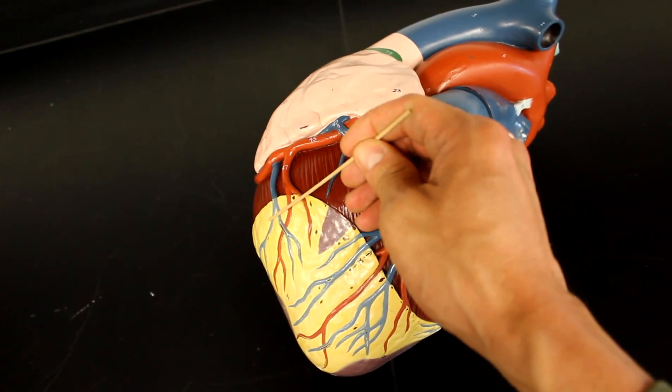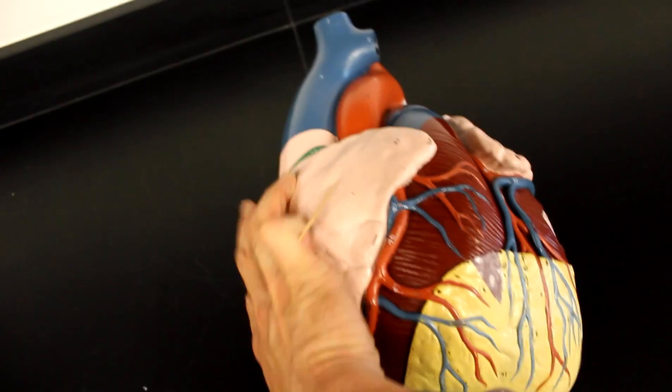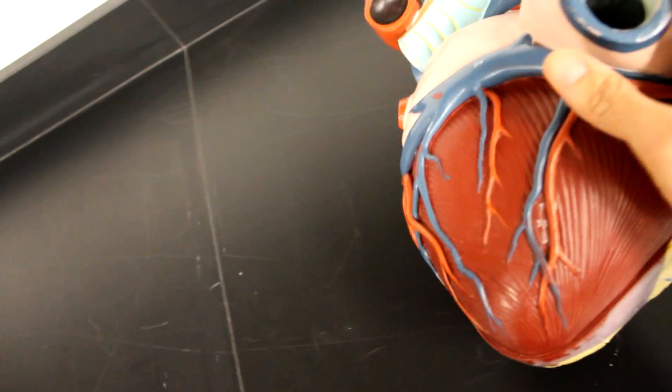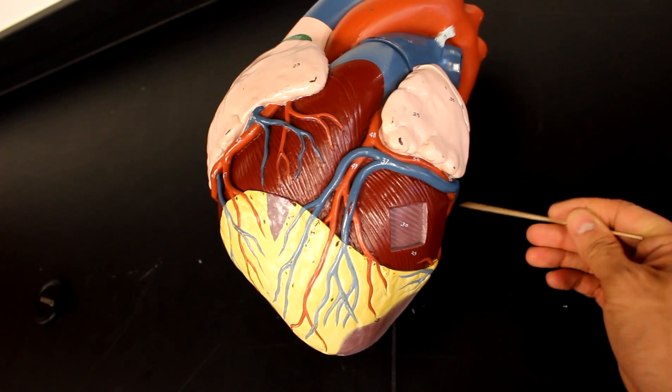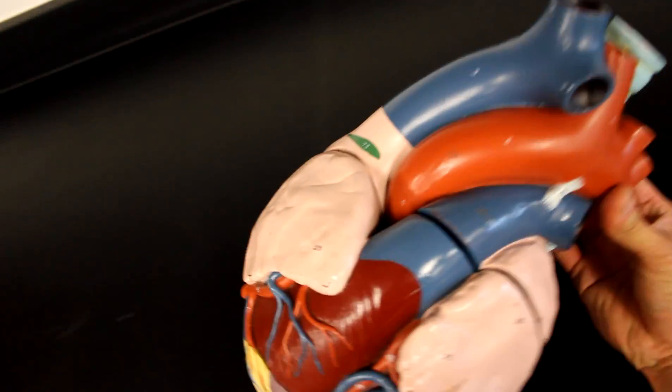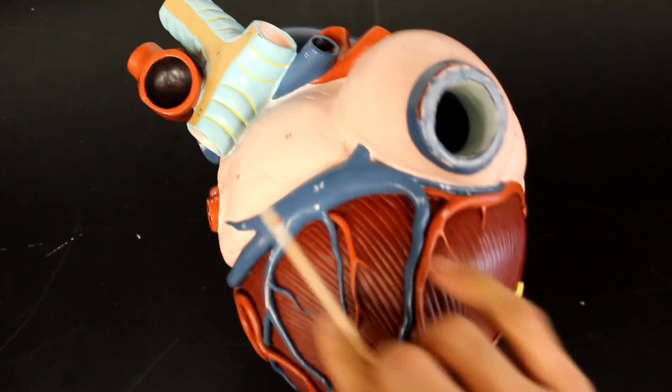The veins: marginal runs with small cardiac vein, posterior interventricular branch travels with the middle cardiac vein here, and then the great cardiac vein travels along with the anterior interventricular and the circumflex. All of them joined together into the coronary sinus.